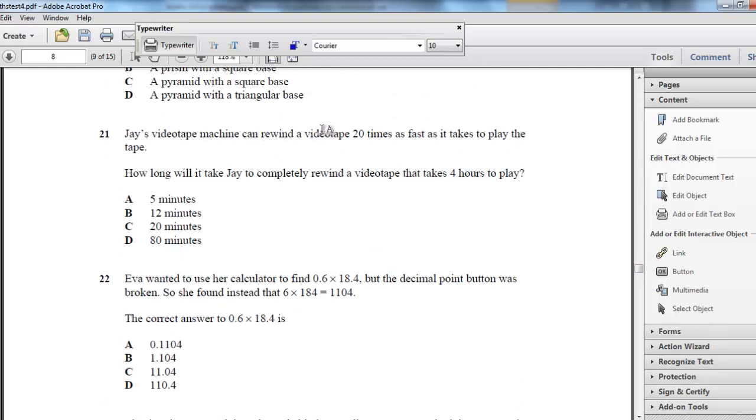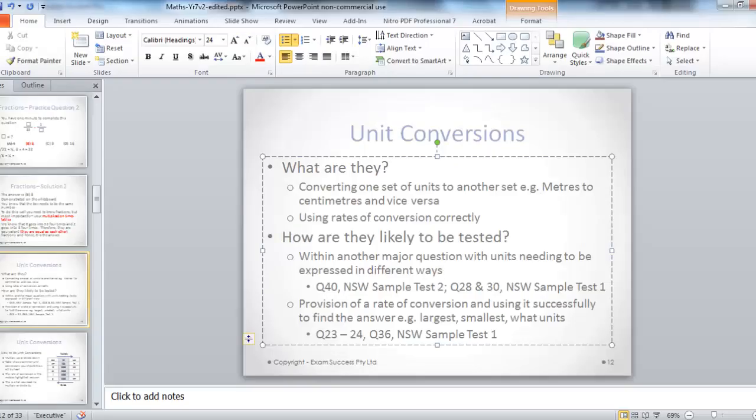Jay's videotape machine can rewind videotape twenty times fast as it takes to play a tape. How long will it take Jay to completely rewind a videotape that takes four hours to play? And you've got minutes here and you've got hours here. So we'll do that question shortly, but that's an example of how they test unit conversions.